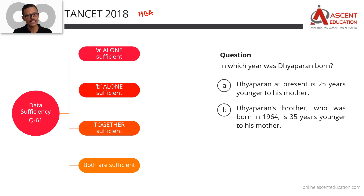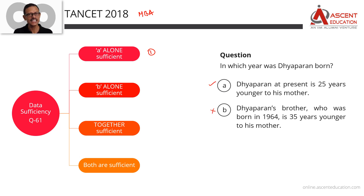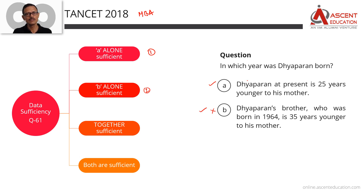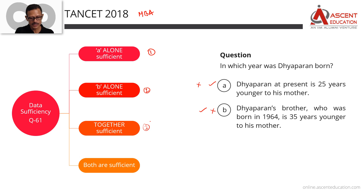There is a question followed by two statements. Answer option 1: if statement A alone is sufficient to answer the question, we mark answer option 1. Answer option 2: if statement B alone is sufficient and we can find the answer, but statement A is not sufficient, we go with answer option 2. Answer option 3: if the statements together are sufficient — neither alone is sufficient, but when we take the information together the data is sufficient — we go with answer option 3.